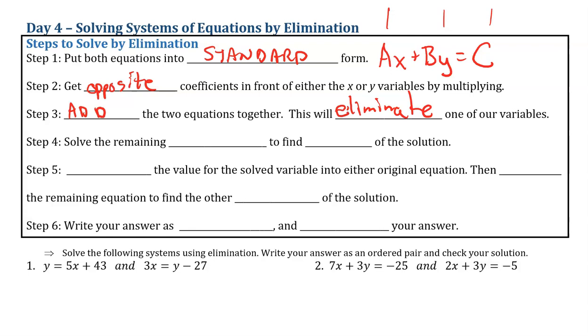And then we will solve that remaining equation to find part of our solution. For example, if we eliminated x, now we can find y. What we're going to do then is we're going to substitute the value for the solved variable into either original equation. And then we're going to solve the remaining equation to find the other part of our solution. If originally we found y by eliminating x, we'll take that value back, put it in, and now we can solve for x.